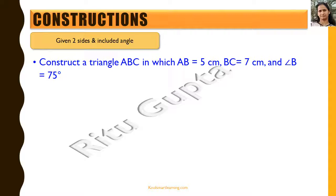The third case is when two sides and the included angle are given — SAS criteria. We draw line segment AB equal to 5 cm. At point B we need to draw an angle of 75 degrees. We know how to draw 60 degrees and how to draw 120 degrees.